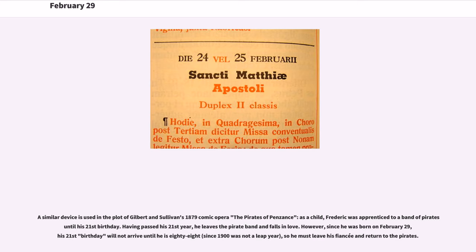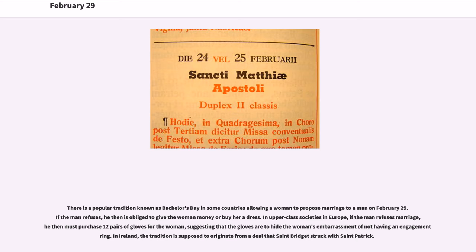There is a popular tradition known as Bachelor's Day in some countries, allowing a woman to propose marriage to a man on February 29th. If the man refuses, he is obliged to give the woman money or buy her a dress. In upper-class societies in Europe, if the man refuses marriage, he must purchase 12 pairs of gloves for the woman, suggesting the gloves are to hide the woman's embarrassment of not having an engagement ring.